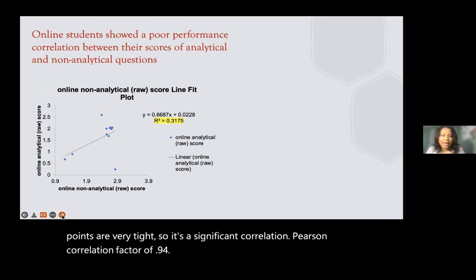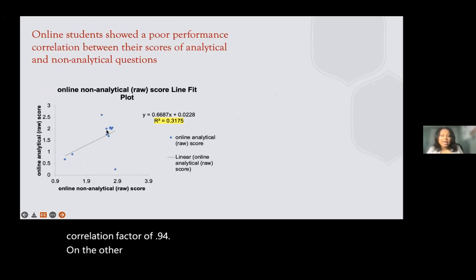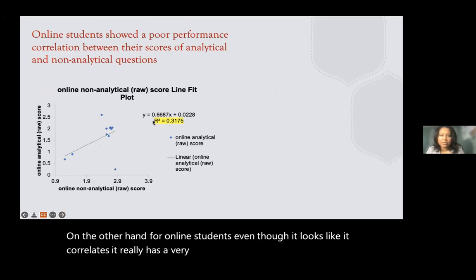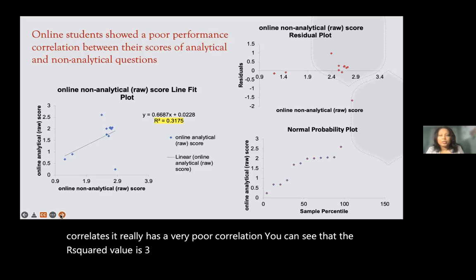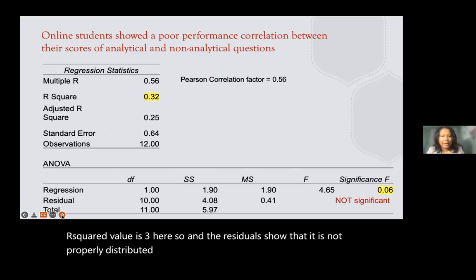For online students, despite an apparent correlation, the relationship was actually very poor — R-squared of only 0.3 — and the residuals were not properly distributed around the regression line, yielding a weak Pearson correlation coefficient of 0.56.